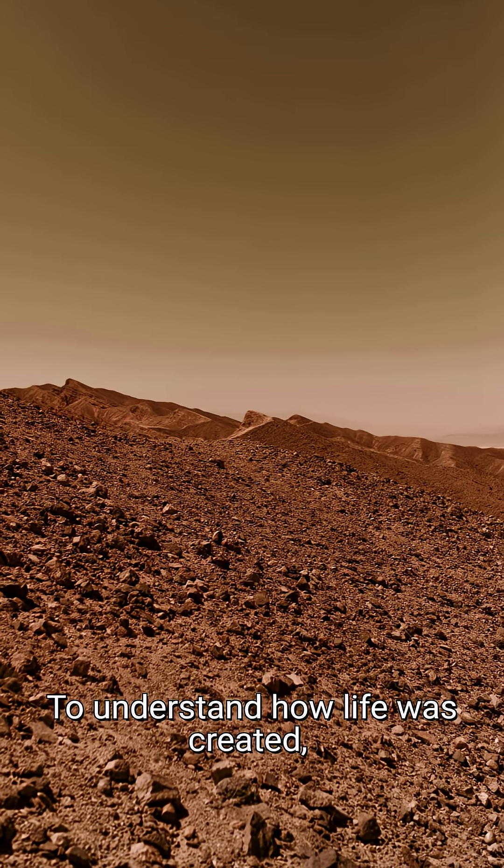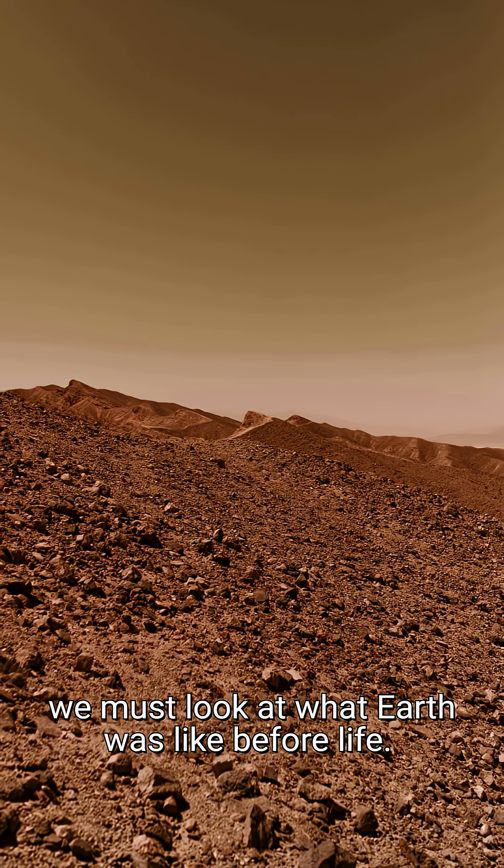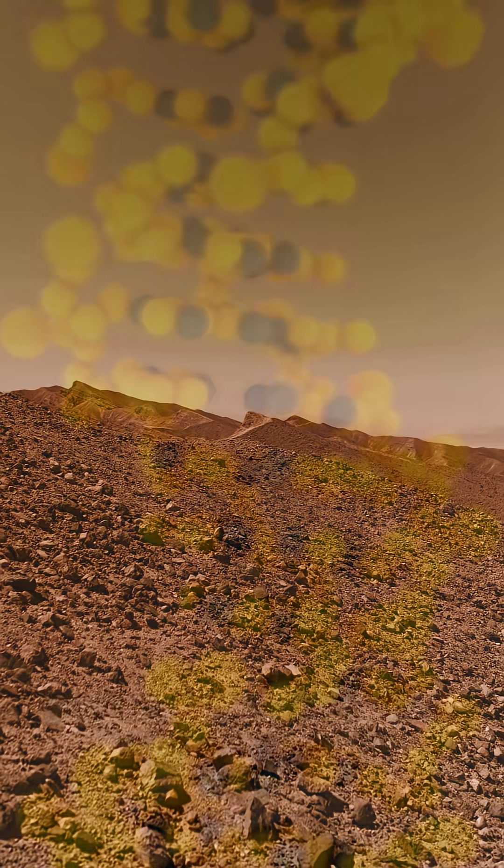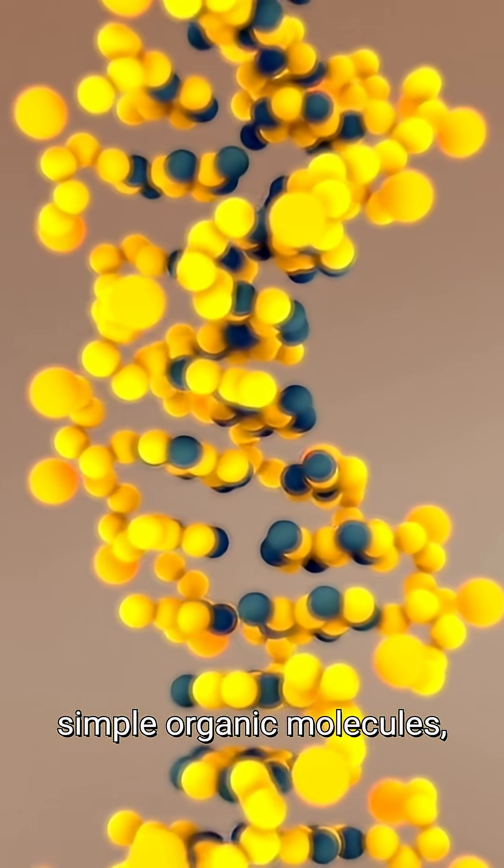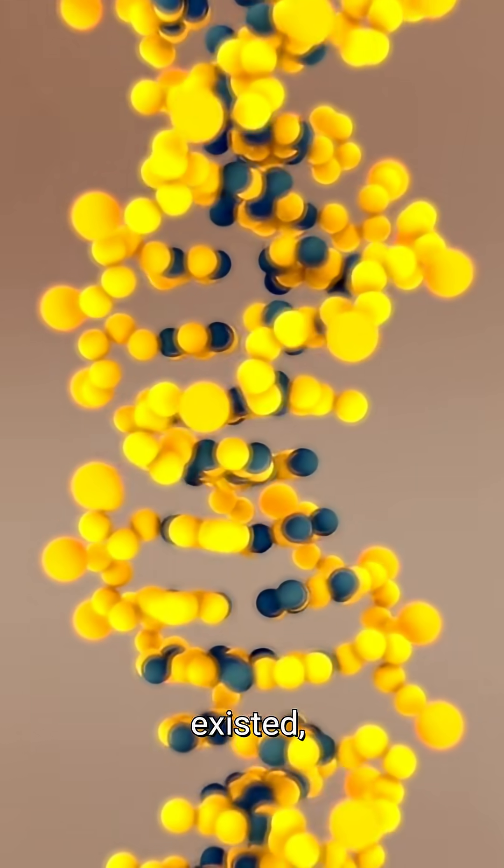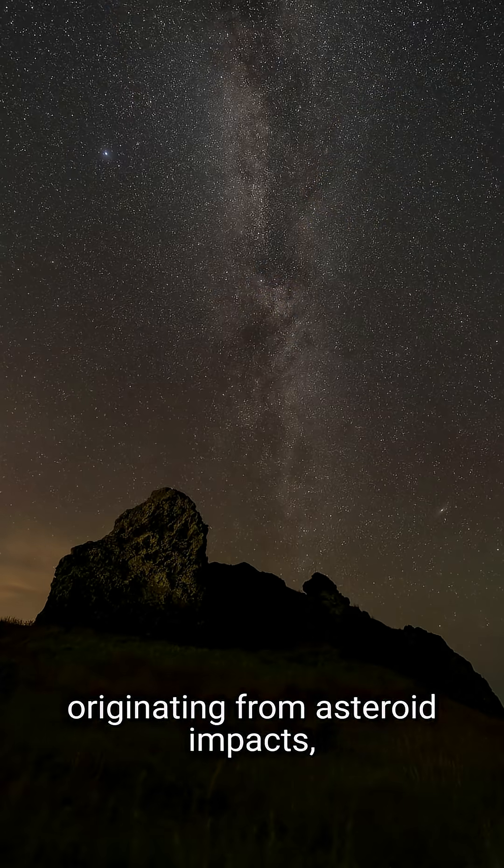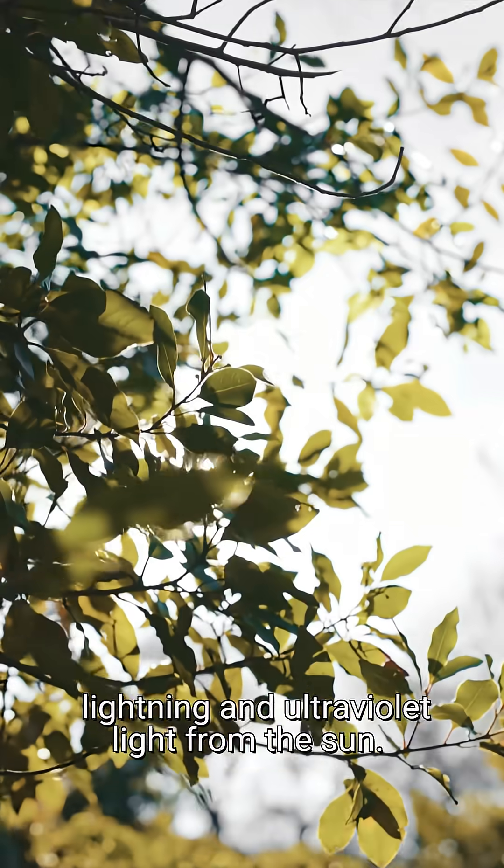To understand how life was created, we must look at what Earth was like before life. At this point, simple organic molecules such as nucleotides existed, originating from asteroid impacts, lightning, and ultraviolet light from the sun.